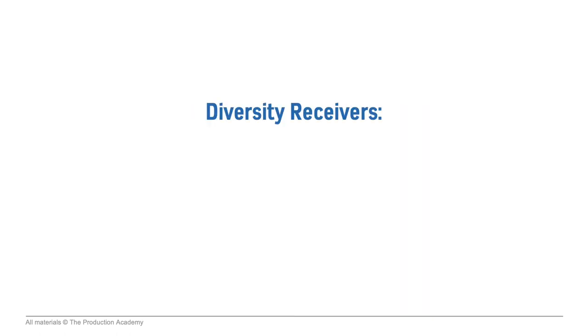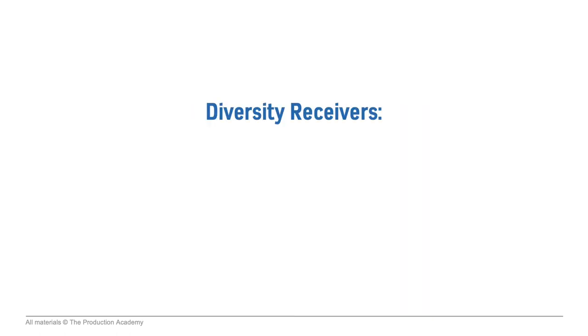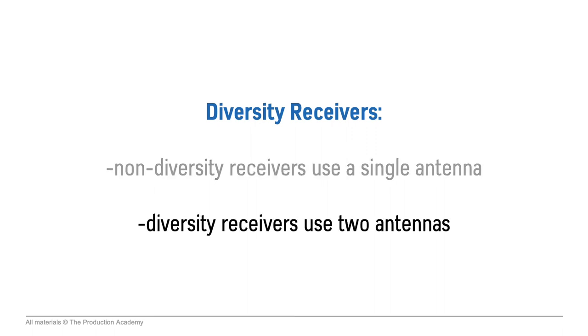Using a helical with splitters or combiners is super common. The last thing we discuss in this course is diversity receivers. With non-diversity receivers, we use a single antenna, and with diversity receivers, we use two antennas. To understand why we need to do this, we have to revisit the polar pattern of a quarter wave antenna. Remember how this antenna has an omnidirectional polar pattern, but it transmits off to the sides like on a plane? Well, when we're indoors and that plane bounces off the walls and ceilings, it can actually arrive at the antenna out of phase, which cancels it out and causes dropouts.